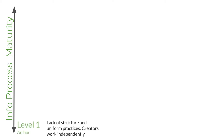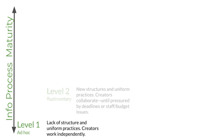This slide offers a brief overview of the model's five maturity levels. Five seems to be the magic number for most maturity models. Level one is labeled "ad hoc" — other models label it reactive or chaotic. There's a lack of structure and uniform practices; mostly content creators work independent of each other. Level two is labeled "rudimentary" — other models label this level tactical or piloting. There are some new structures being adopted and some uniform practices, with some collaboration among content creators. But all of that falls apart when people are pressured by deadlines or staff or budget issues.